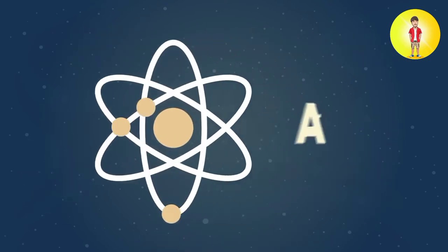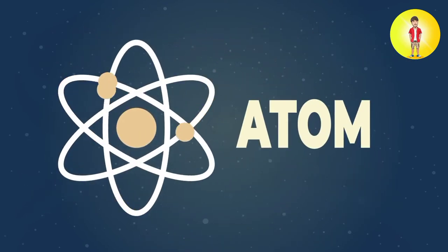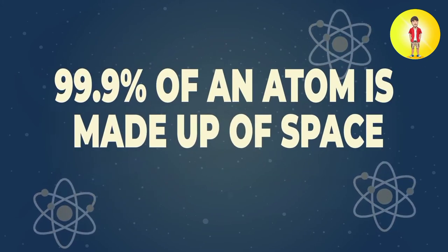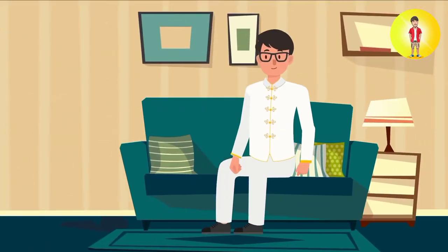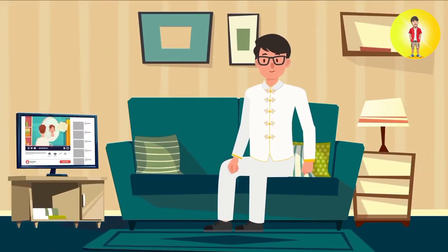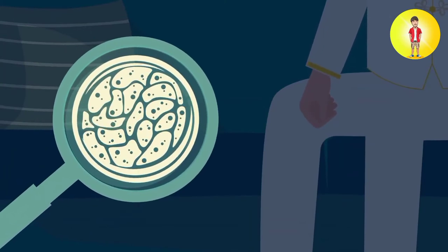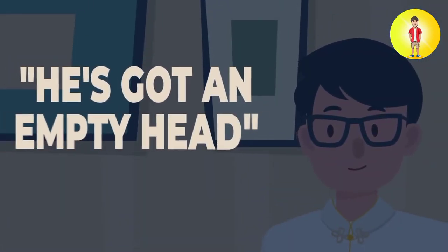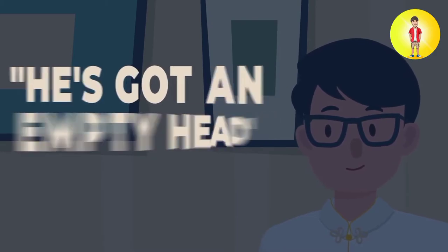With this in mind, let's look at the composition of an atom, the primary building block of matter. An atom is 99.9% empty space. That means that all the solid objects around us, the chair you're sitting on, the device you're watching this video on, are all made of mostly empty space. So when people say he's got an empty head, technically, they're not lying.